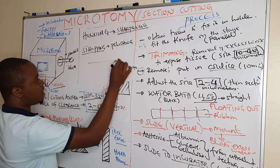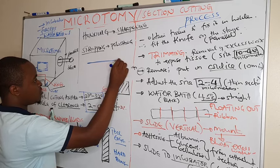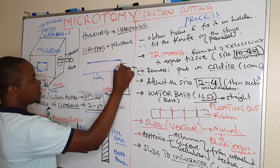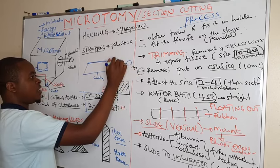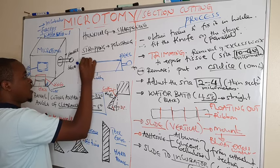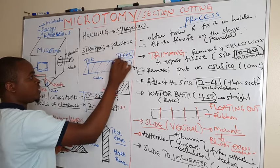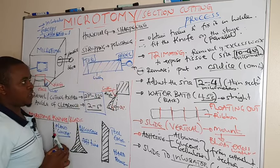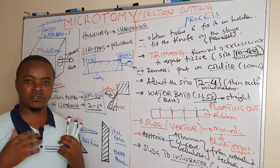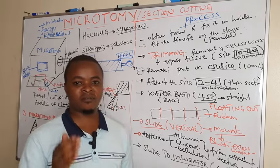Finally, on the microtome knife: the angle formed near the handle is known as the heel, and the angle formed away from the handle is known as the toe. When the knife becomes blunt or has niches, we can always hone using different honing stones. Thank you so much for learning with us.